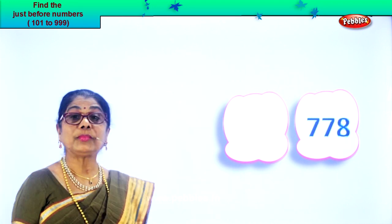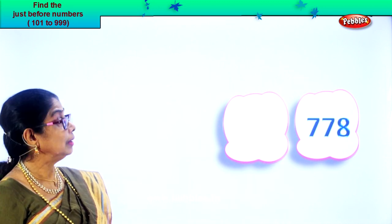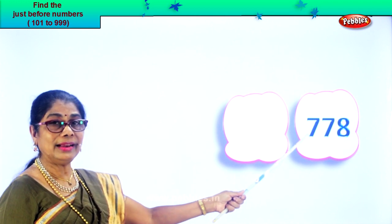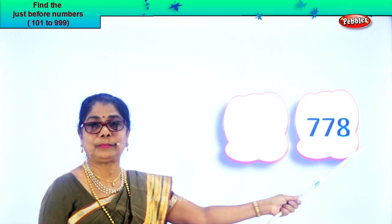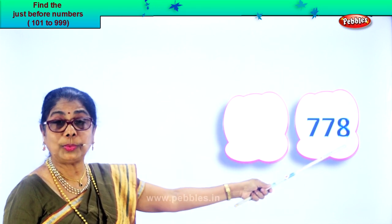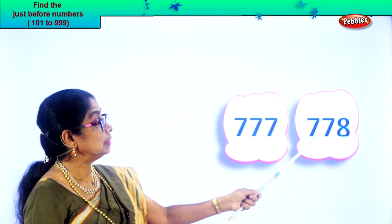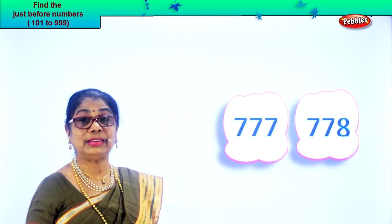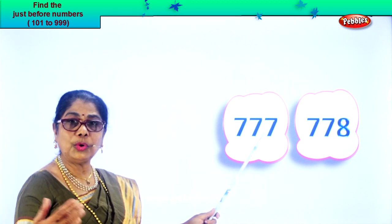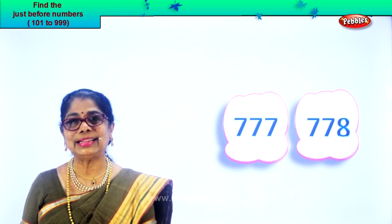Here we are. In the ones place you have eight, tens place seven, and hundreds place seven. Read the numeral: 778. Look at the ones place — eight. One less than eight is seven. So one less than 78 will be 77. The number before is 777. Read 777, 778.